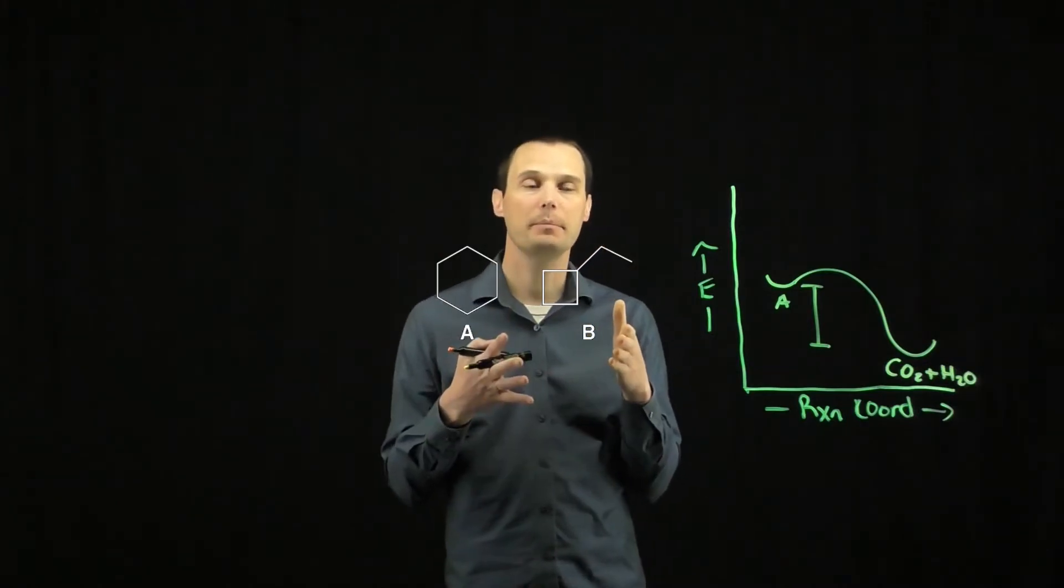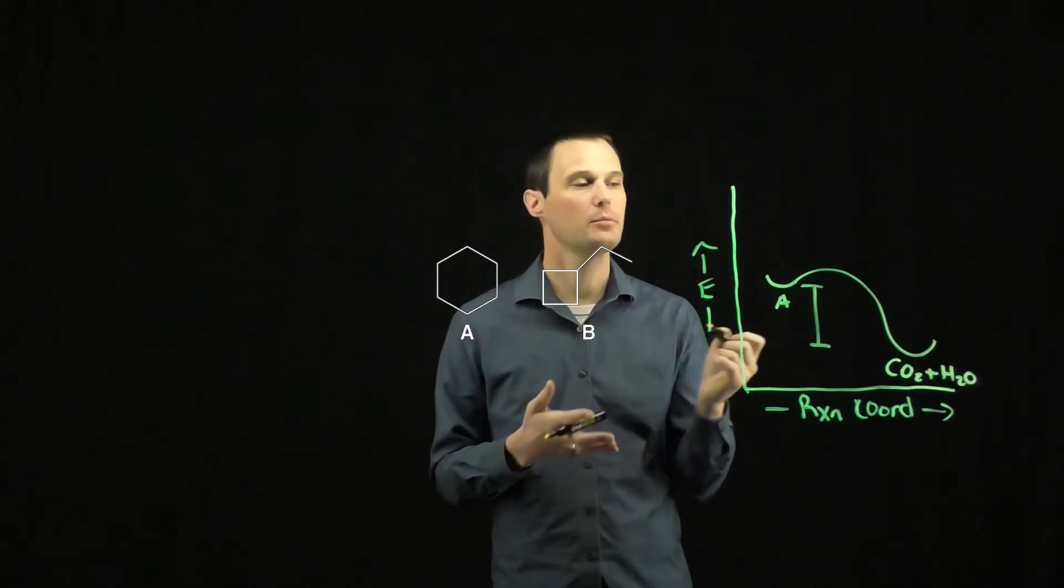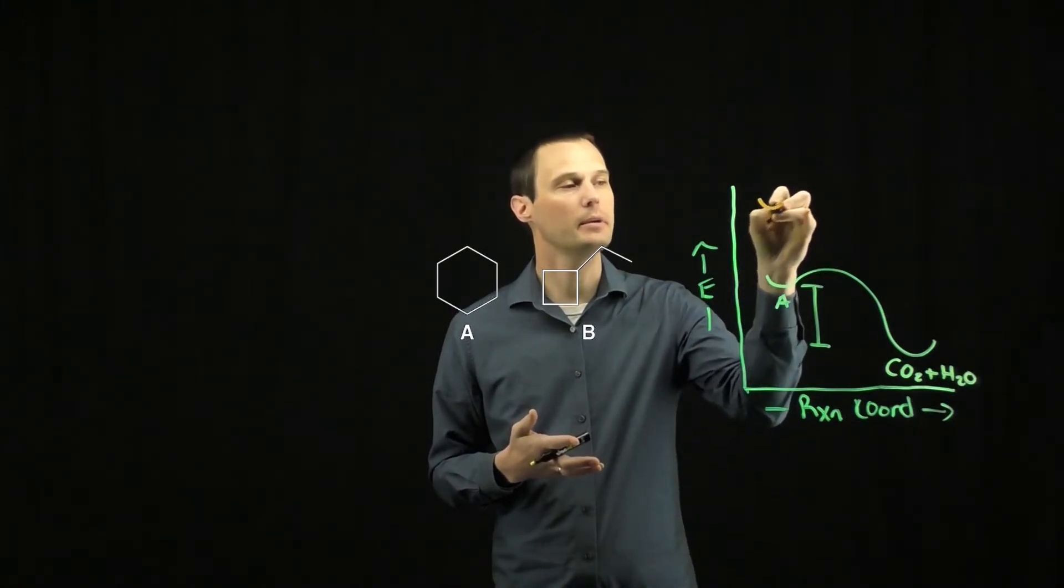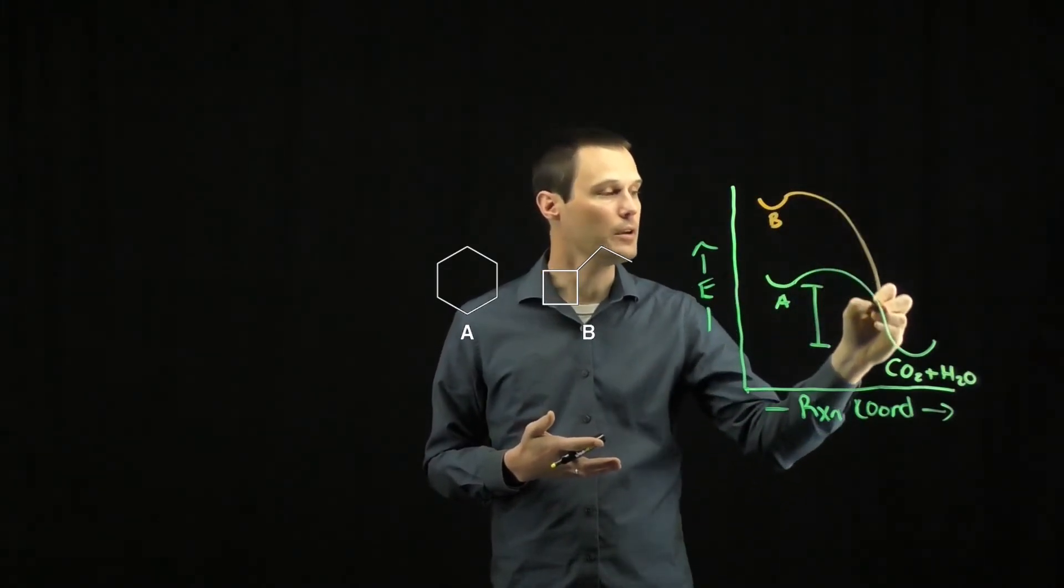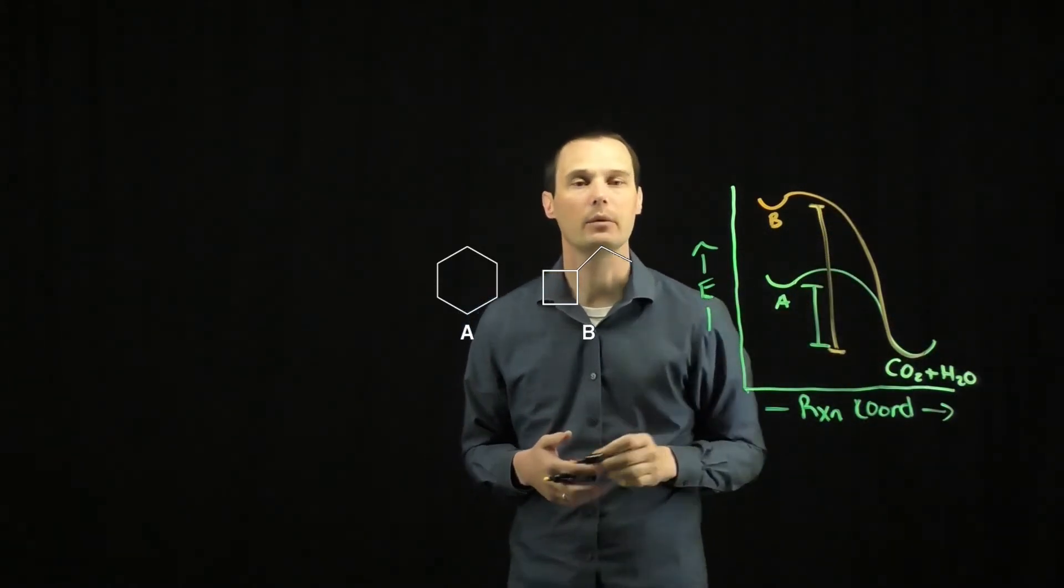The difference between A and B is that B is a cyclobutane, and cyclobutanes are small strained rings. Since cyclobutane is a small strained ring, the starting material is going to be higher in energy. It's going to the same products though, so we have a different delta H for B than we do for A.